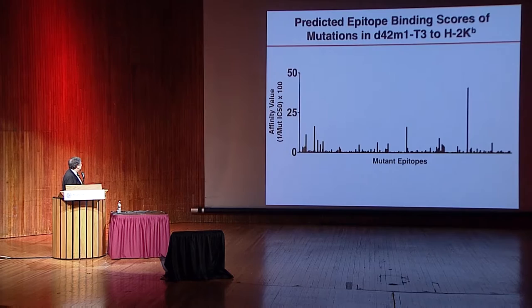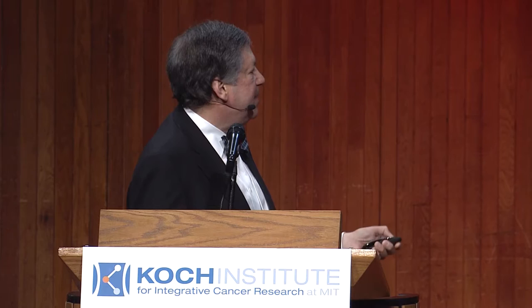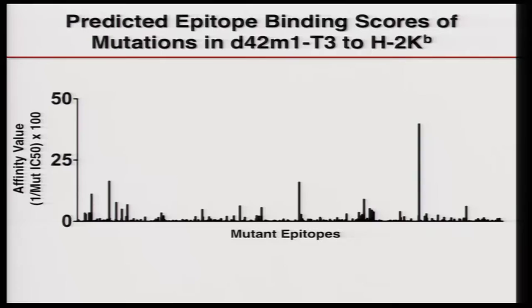We used the same approach to narrow down whether this was restricted to one or the other of the class I molecules. You can see that you can block this stimulation with anti-H2K of B, but not anti-D of B. This was a surprise to us, because we thought checkpoint blockade would have produced a very large polyclonal response, but it looks like the response is relatively restricted — at least restricted to a single class I molecule.